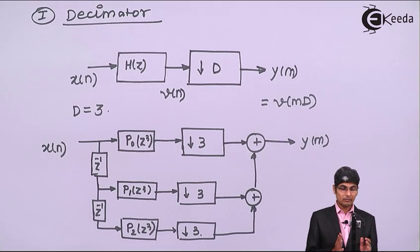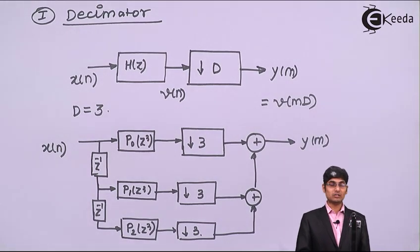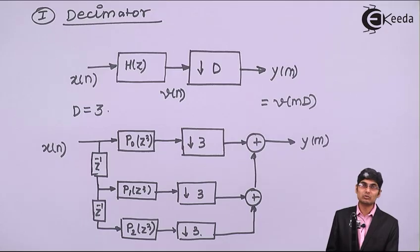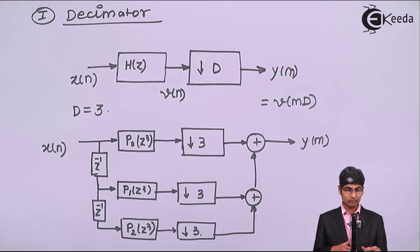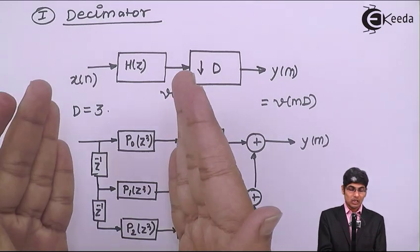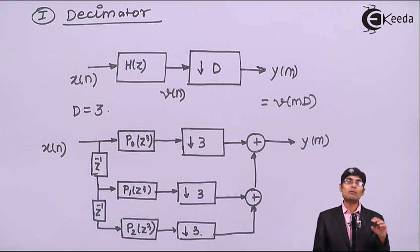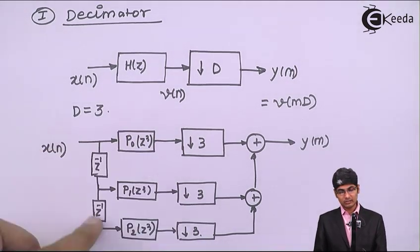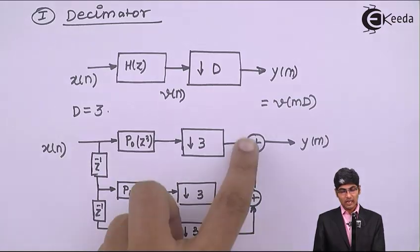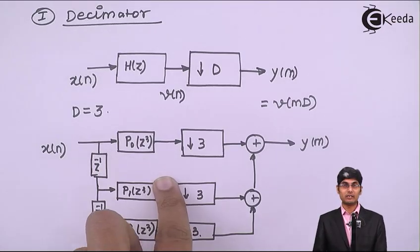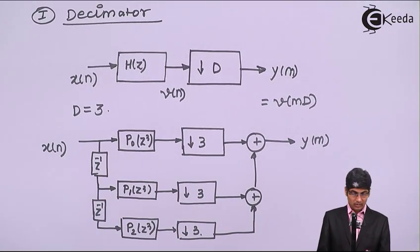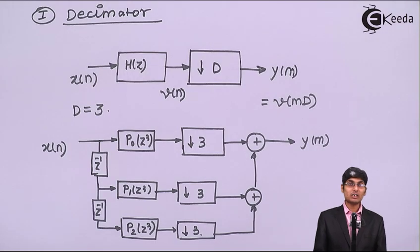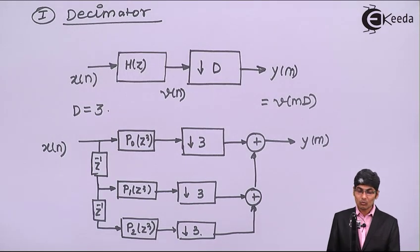This is the polyphase structure of a decimator — that means I am using a filter designed using polyphase structures. You can see the filter is polyphase, then I have the decimator, and they are added together to get Y(m). It is very simple, but here observe one thing.